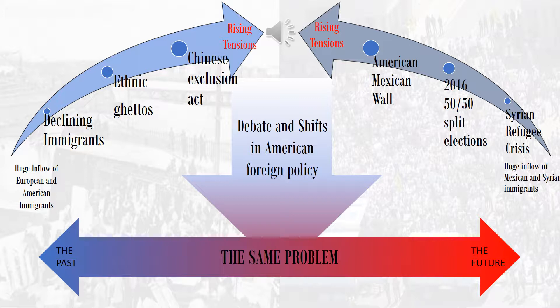On this slide, you can see the rising tension and the immigration problem of the past and of today. As we go along, we see these stepping stones of rising tension that eventually boil over into anti-immigration doctrines. These changes always lead to debate and shifts in American foreign policy. So whether it be the future or the past, these problems are very similar.